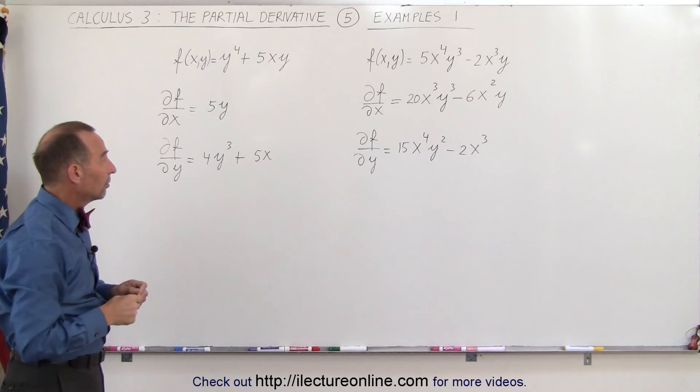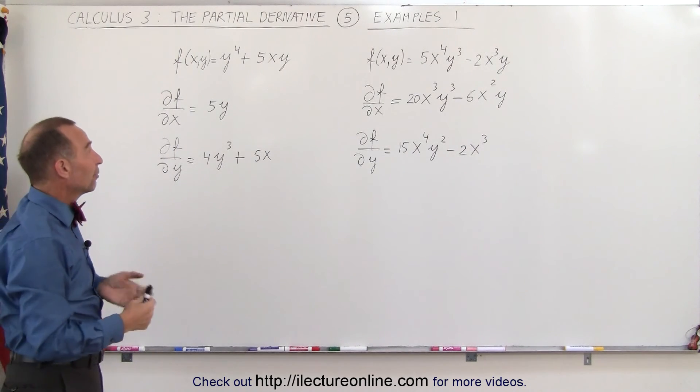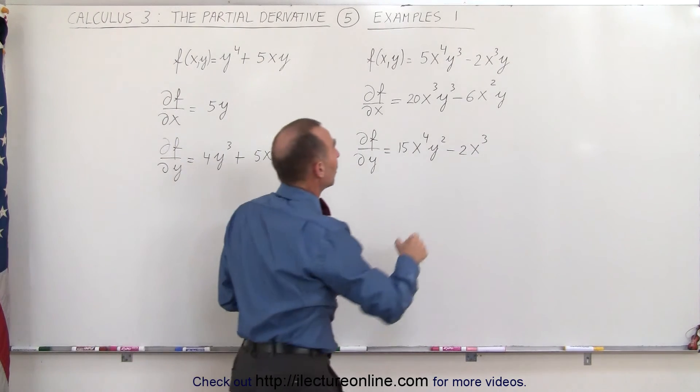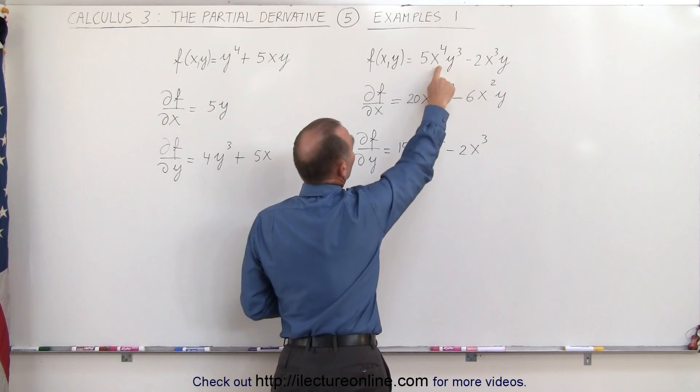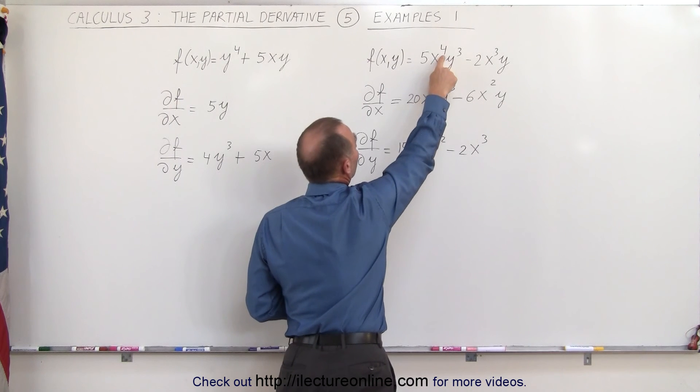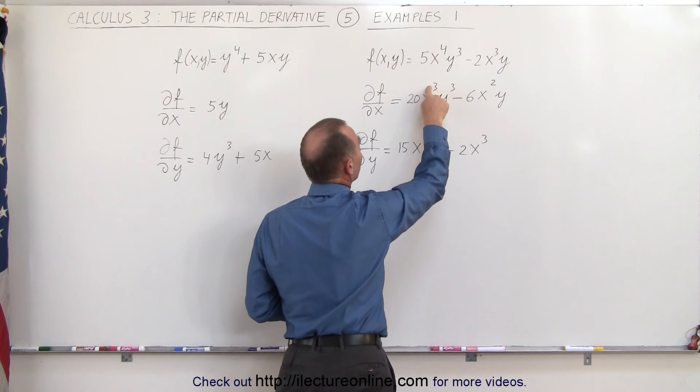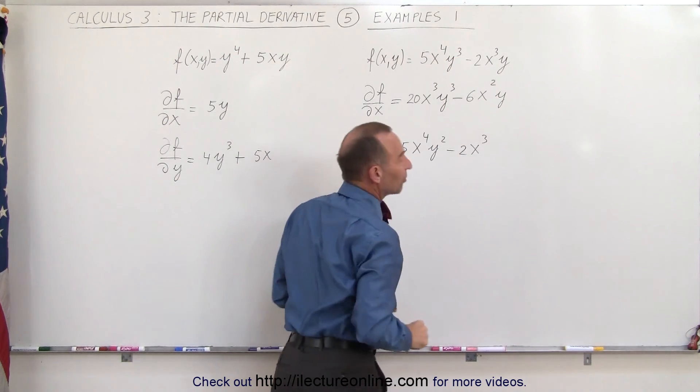So it takes a little getting used to, but they're actually easier than the regular derivatives because you could call the other variables constants. Also notice what I did here was I simply realized I was going to take the derivative of x to the 4th. I get 4 times 5 is 20, x to the exponent minus 1, and y cubed remains the same because that's a constant.